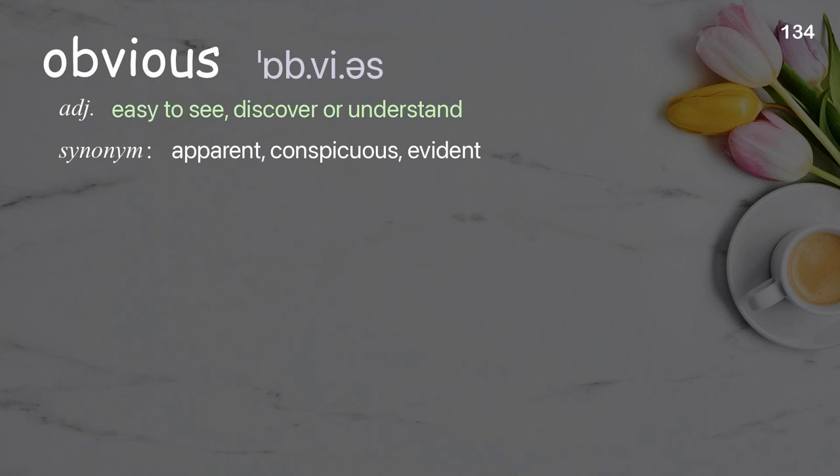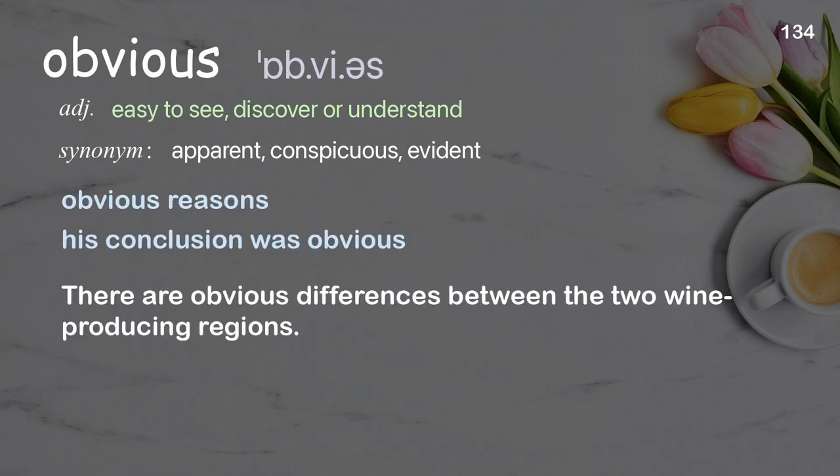Obvious. Easy to see, discover, or understand. Examples: obvious reasons, his conclusion was obvious. There are obvious differences between the two wine-producing regions.